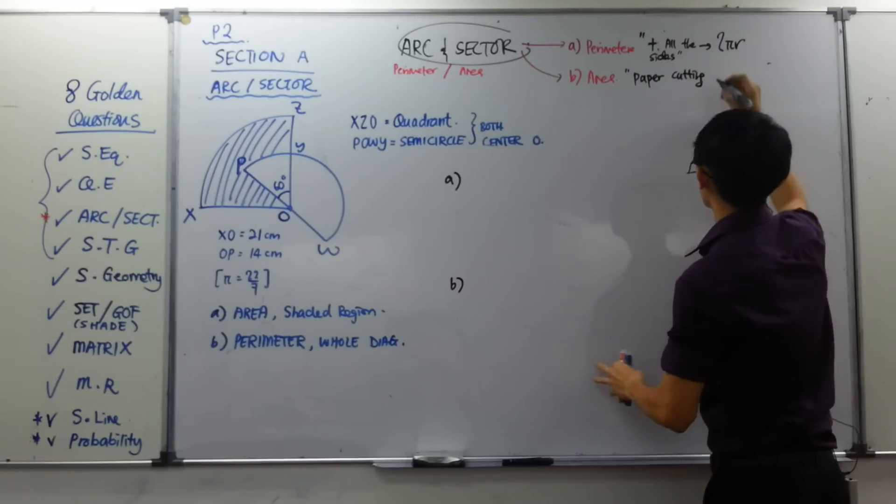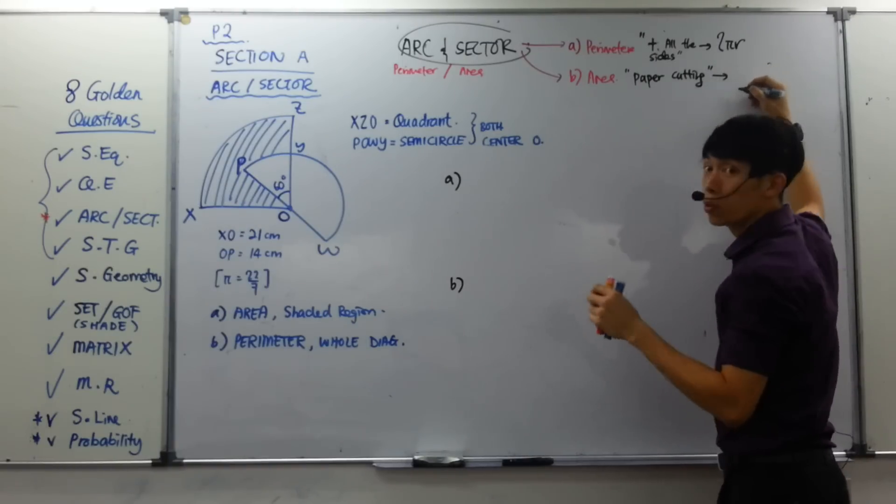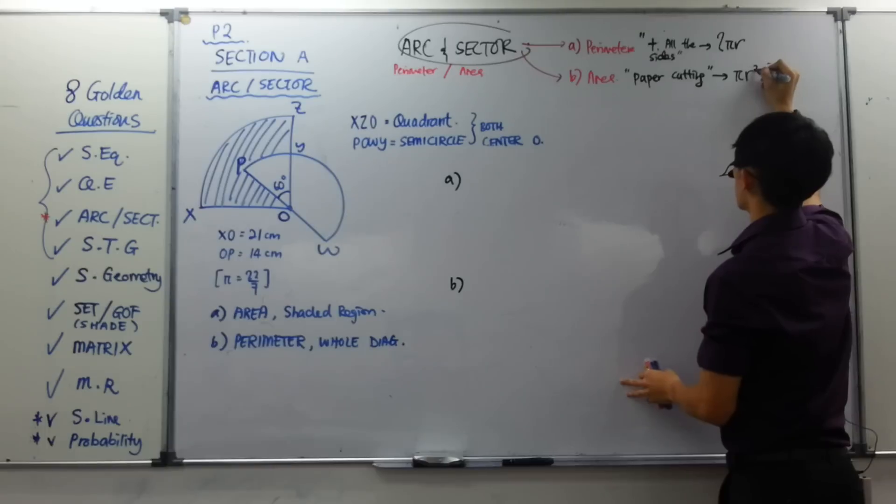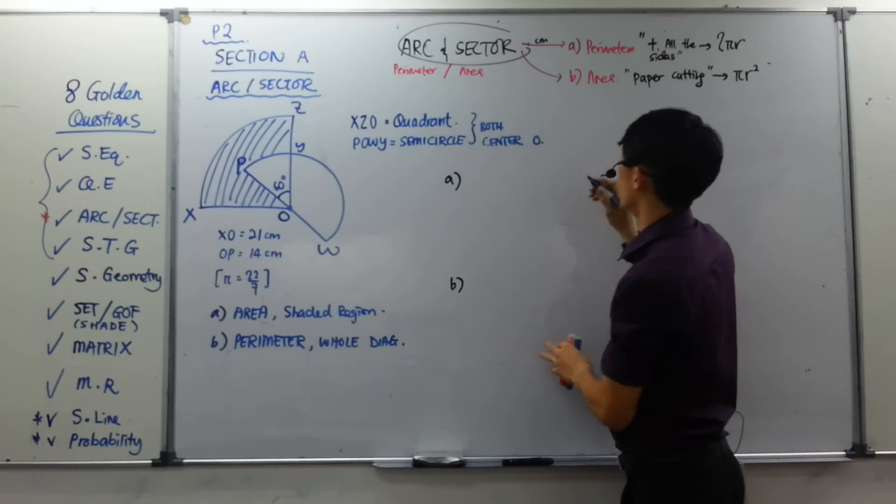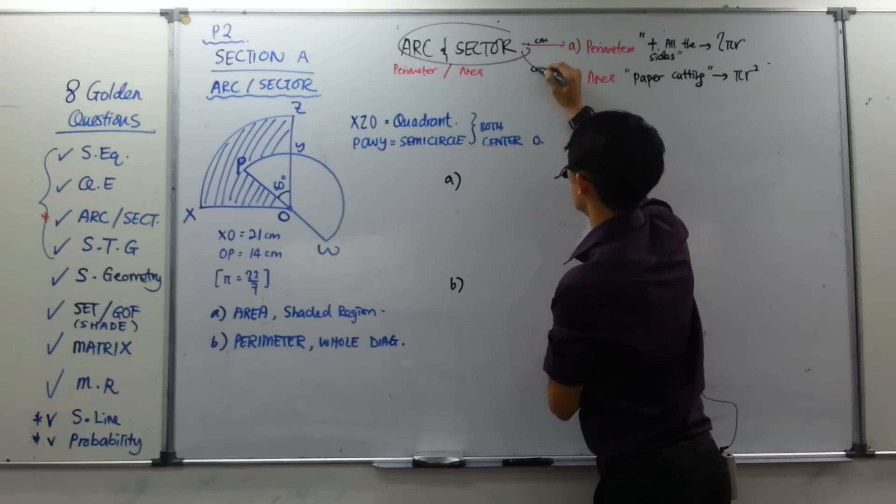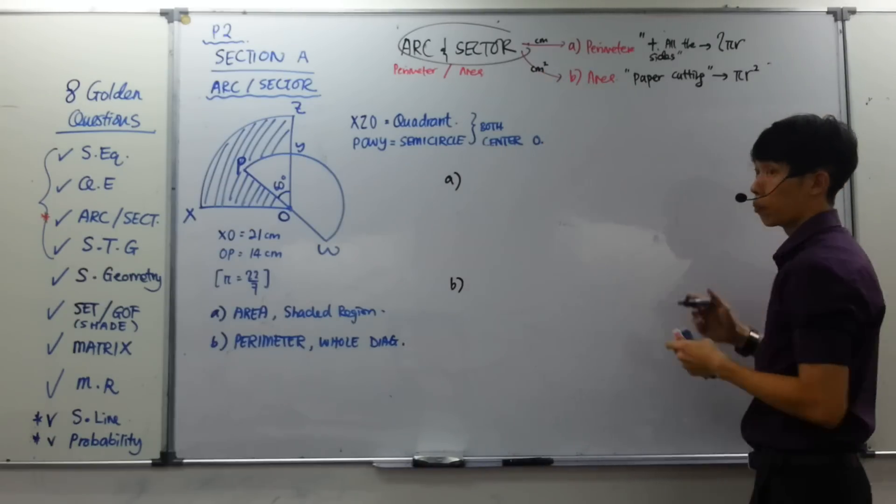And after you plus all the sides, of course, you have to know the next thing will be this thing called the formula. You have to know this. Form 2, you already go through this before. And area means what? It's called paper cutting. What do I mean by paper cutting? Later I will show you. This thing called shaded region. And the formula. What is the formula? Pi r squared.